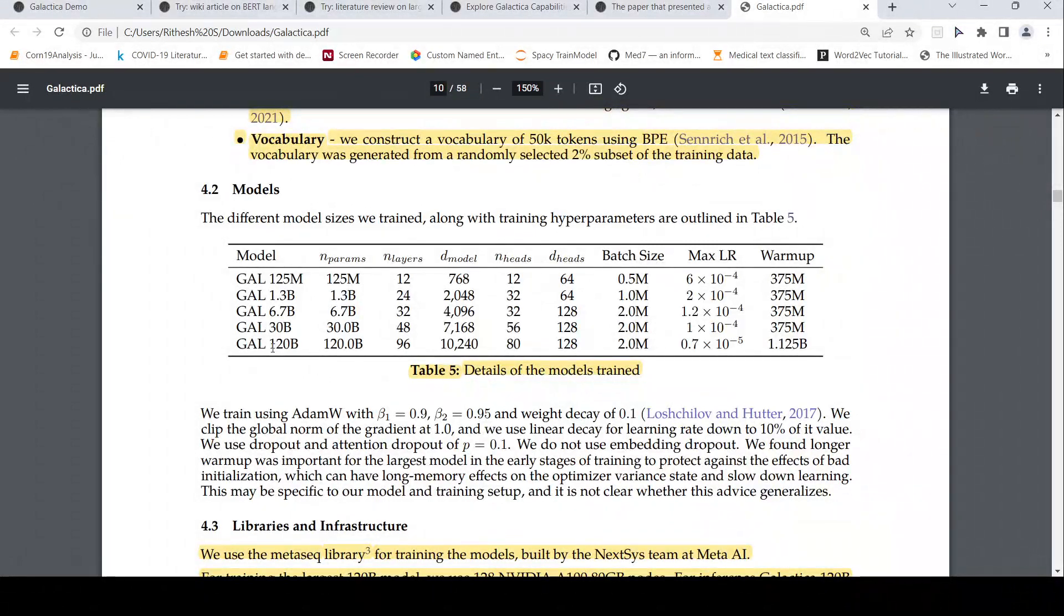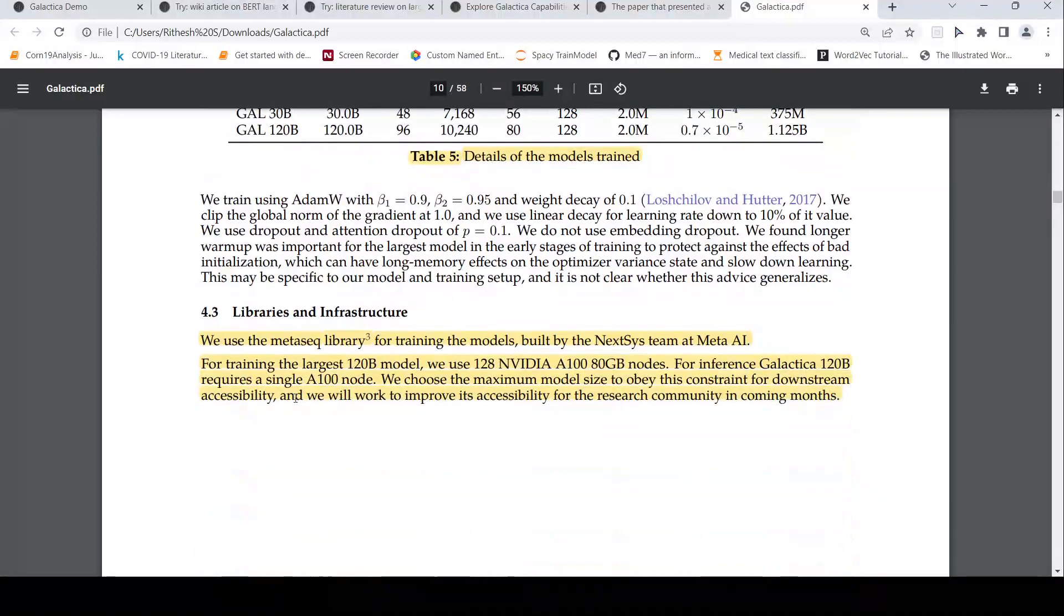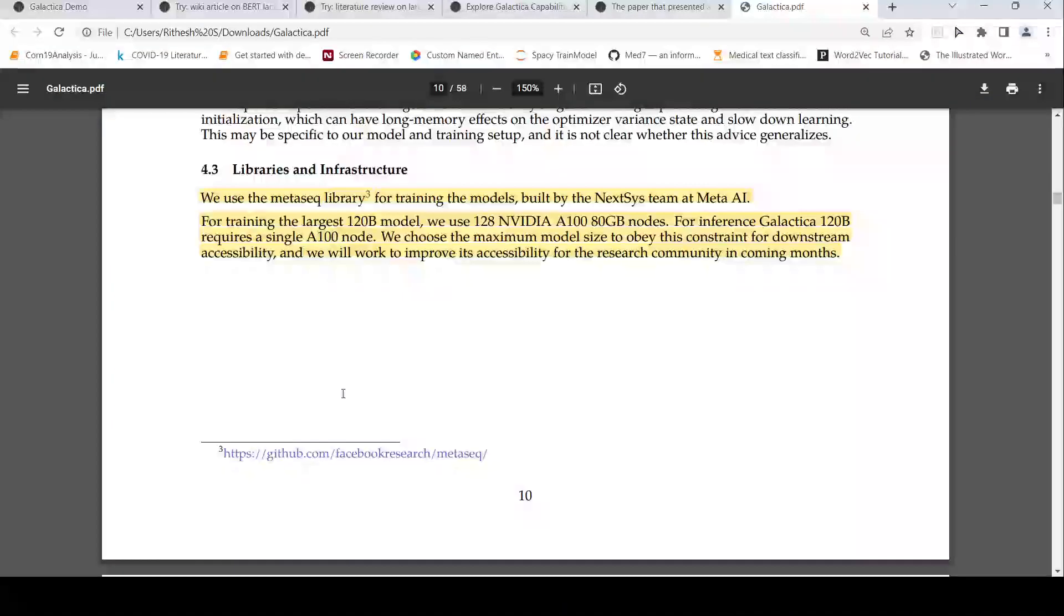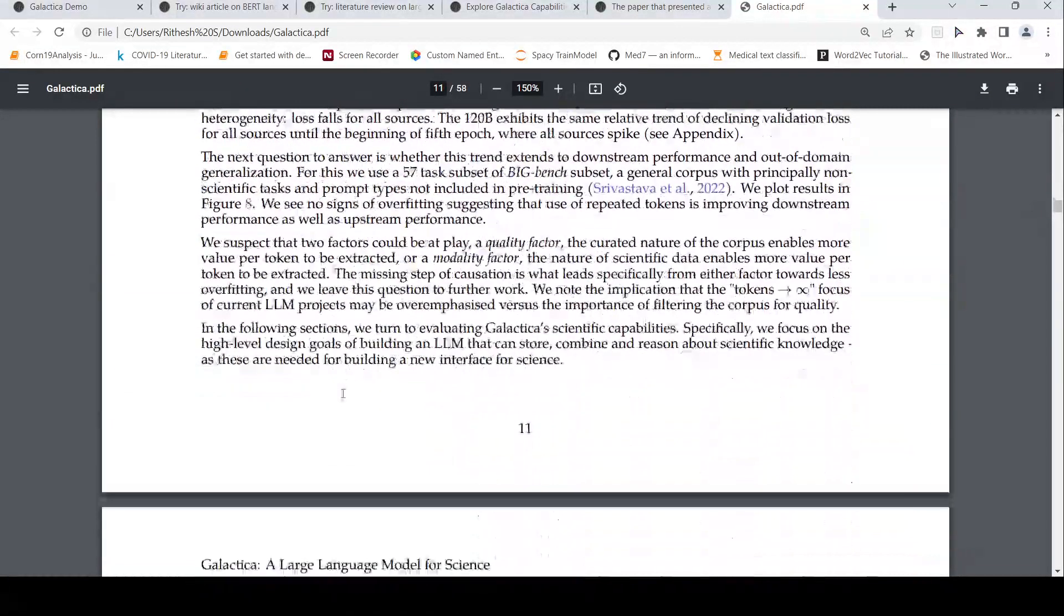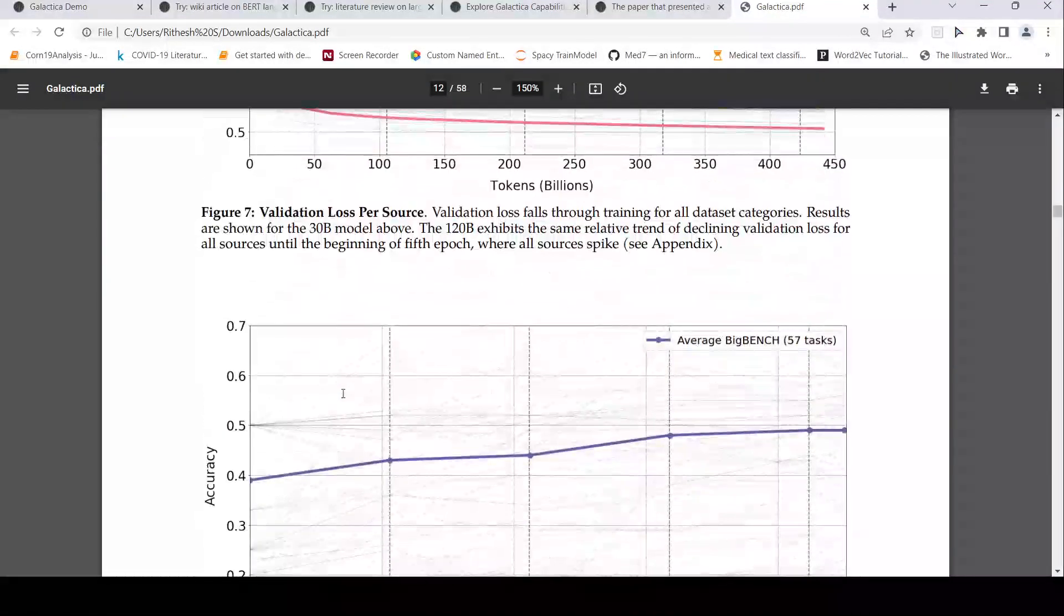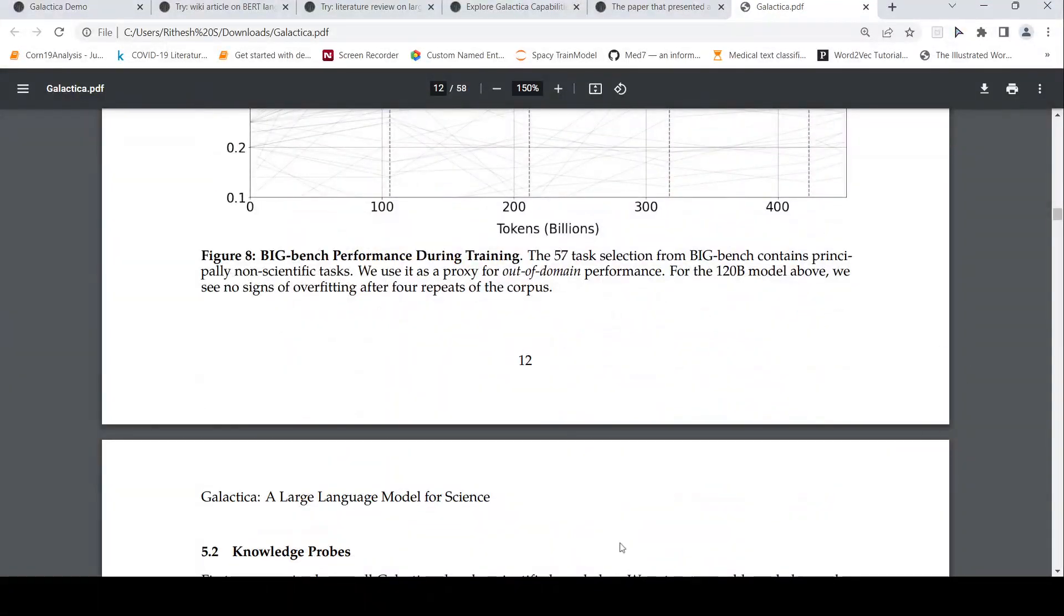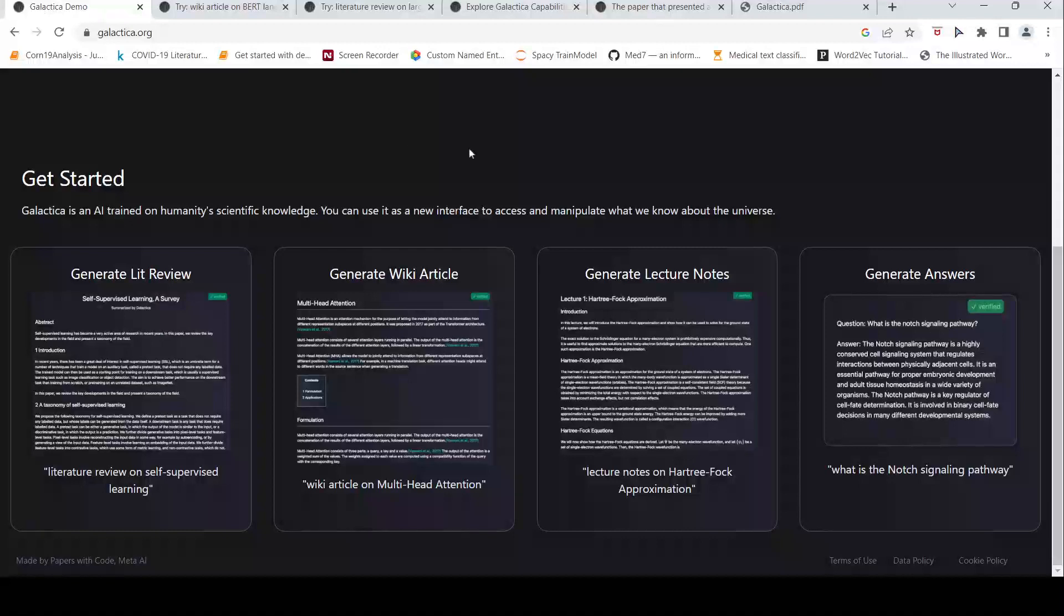The model which has been released with weights is this 120 billion parameter model. And they have trained it with different optimizers and that's what is explained over here. So for training this largest model, they required 128 NVIDIA A100 80GB nodes. For inference, it requires only a single A100 node. So this is about training and further details are explained about the performance and other things. You can have a look at it.